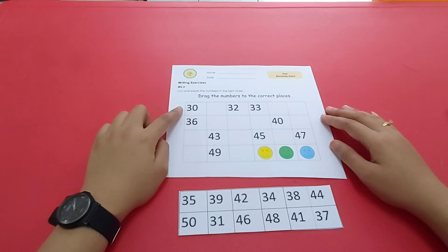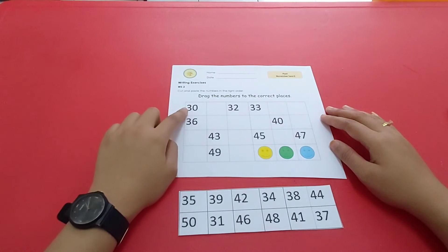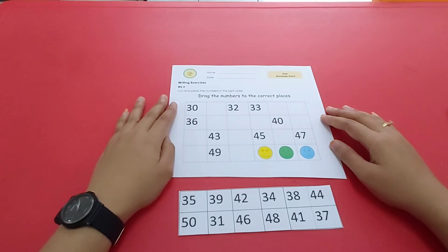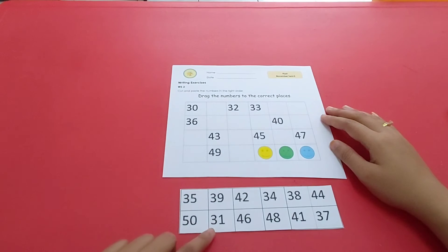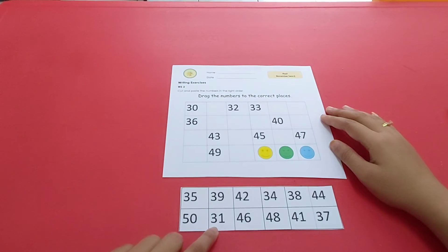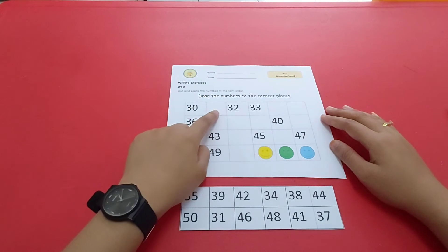Okay, what number comes after number 30? You were correct. The number after number 30 is 31. Now, let's cut this and paste it over here.